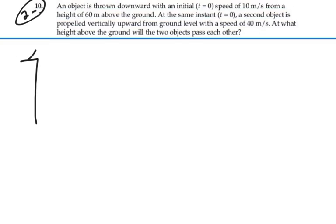We've got a first object being thrown, and our distance above the ground is 60 meters, and this object is being thrown downward with an initial velocity of 10 meters per second.